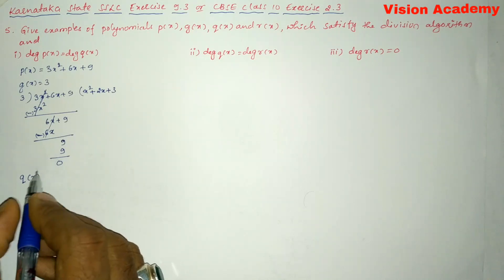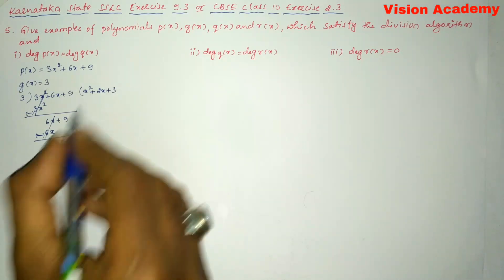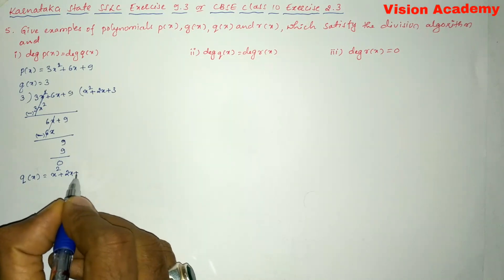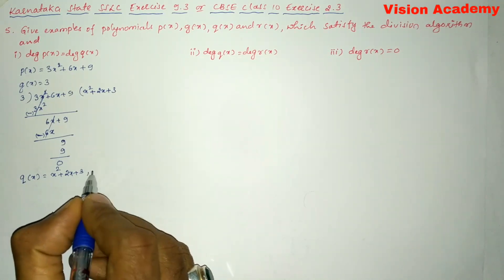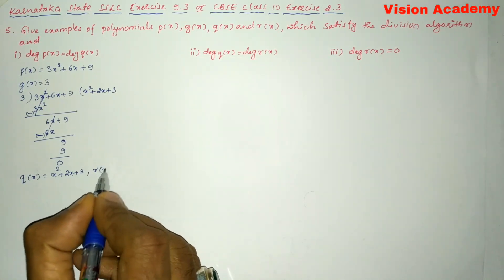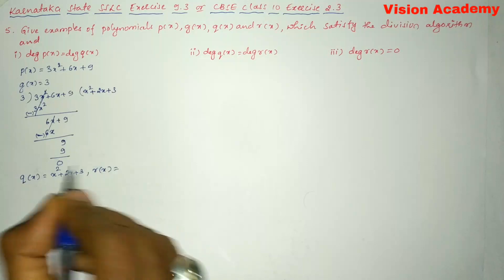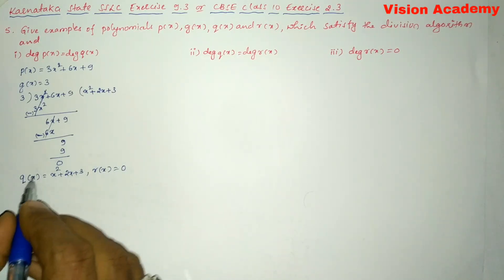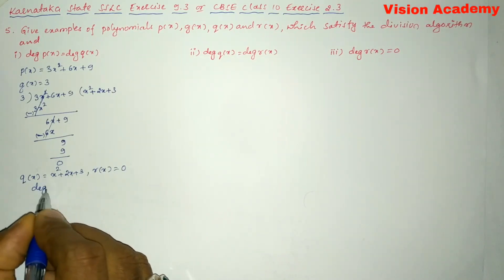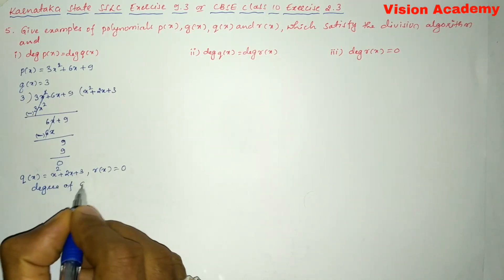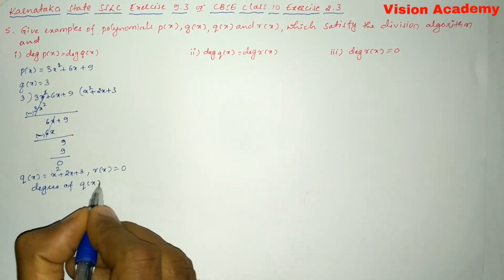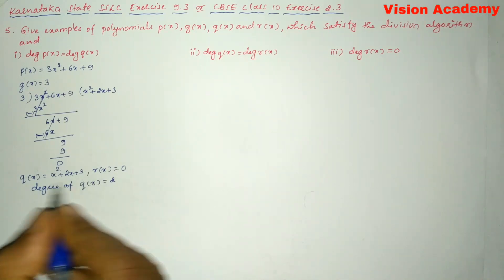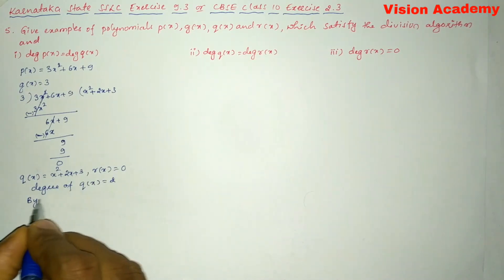Now we can say that q(x), the quotient, is equal to x² + 2x + 3, and r(x), the remainder, is 0. The degree of q(x) is 2 — you can see the power of x is 2 — which equals the degree of p(x). This satisfies the condition by the division algorithm.